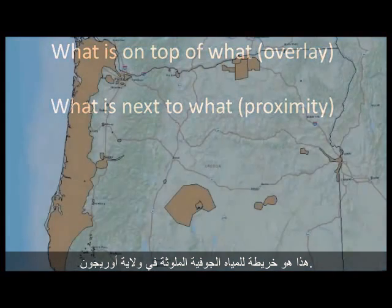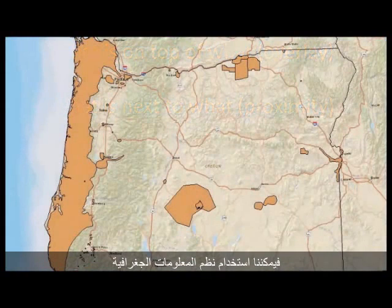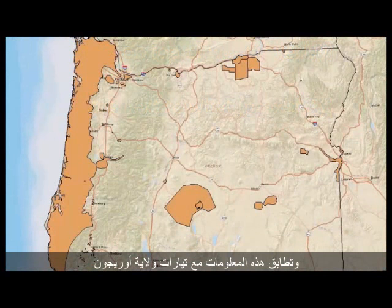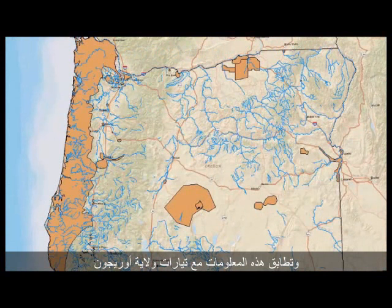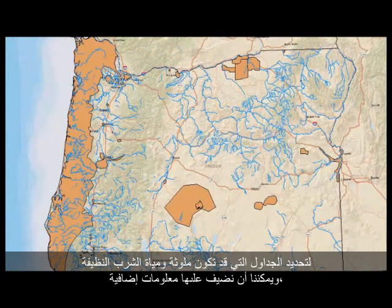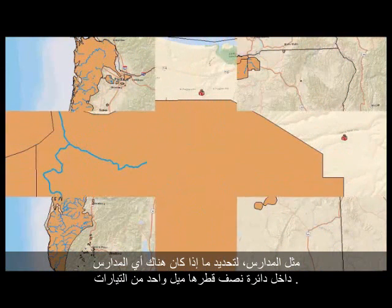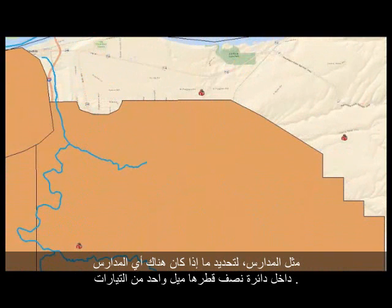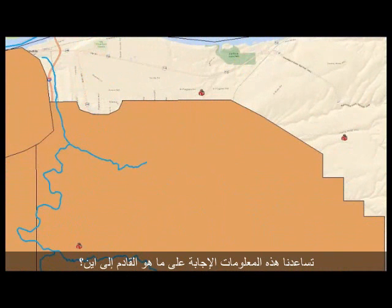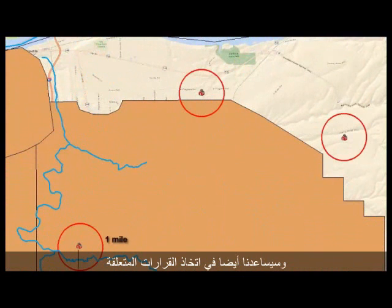For example, this is a map of contaminated groundwater in the state of Oregon. We can use a GIS to overlay this information with Oregon streams to determine potentially contaminated streams and drinking water. We can add additional information, such as schools, to determine if there are any schools within a one-mile radius of the contaminated streams. This information helps us answer what is next to what and will also help us make decisions concerning the school's water quality.